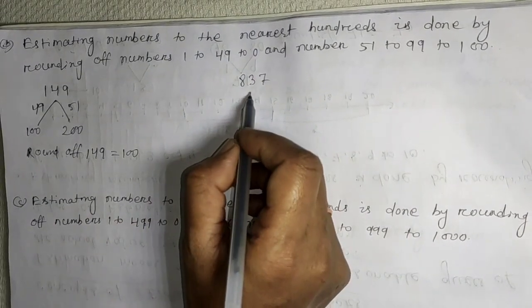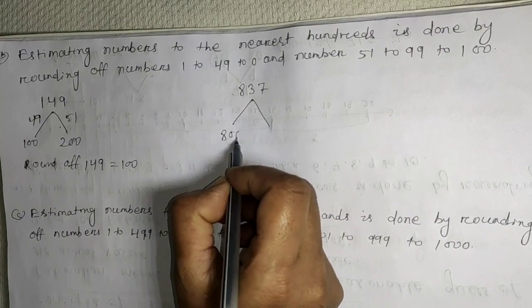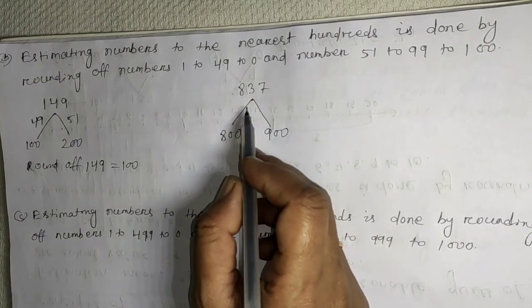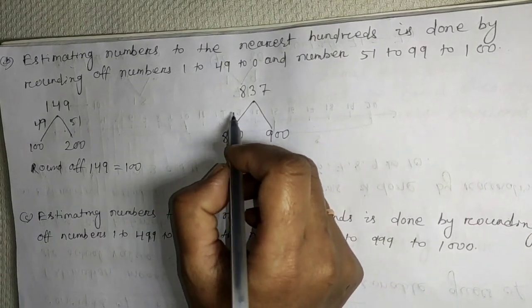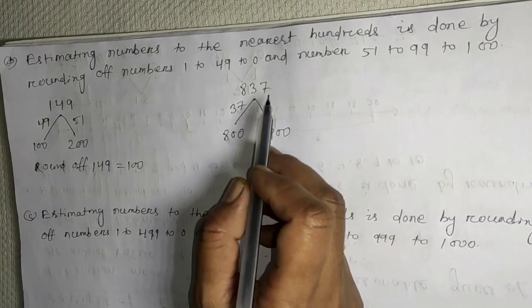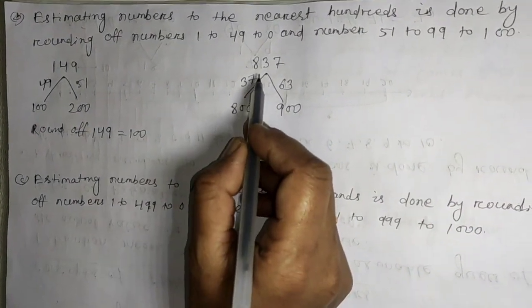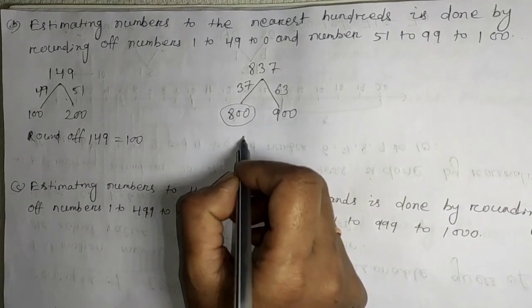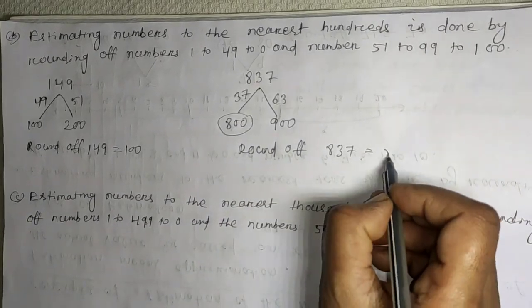Another example: round off 837. It lies between 800 and 900. The difference between 837 and 800 is 37, and the difference between 900 and 837 is 63. So the nearest is 800. Therefore, round off of 837 is 800.